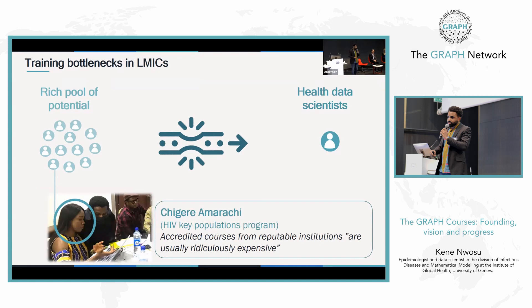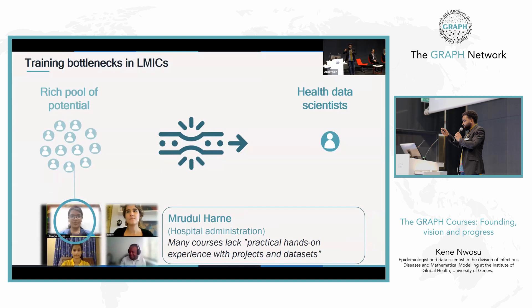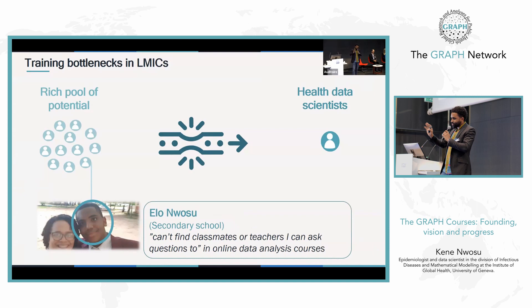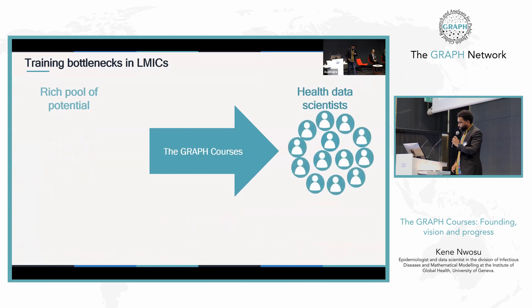Bottlenecks like what Chigiri Amarachi describes — she works in the HIV Key Populations Program in Nigeria and mentions how accredited courses from reputable institutions are usually ridiculously expensive. Or Murdo, who works in hospital administration in India and is trying to learn health data science, but talks about how many existing courses lack practical hands-on experience with projects and data sets. Or Elu Onwosu, my little brother in secondary school in Nigeria, who talks about how you can't find classmates and teachers to ask questions — a lack of community built around online data analysis courses. What we're trying to do with Graph Courses is open up this bottleneck so we can push this pool of potential analysts to become efficient health data scientists that can drive data-informed policy.